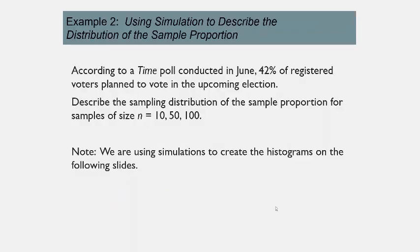Now let's do an example to illustrate the sampling distribution of the sample proportion. According to a Time poll conducted in June, 42% of registered voters plan to vote in the upcoming election. For this example, we're going to assume the real population proportion is 0.42. We'll describe the sampling distribution of p-hat for samples of size 10, 50, and 100 by taking 300 sample proportions for each.